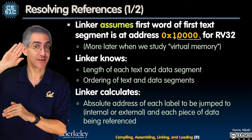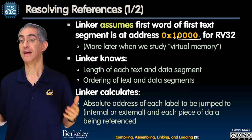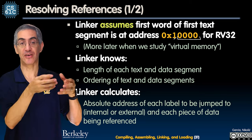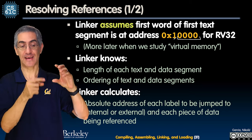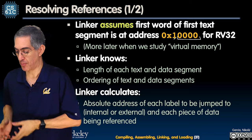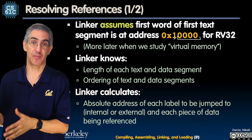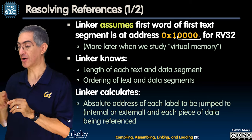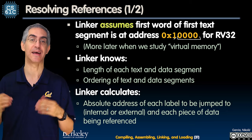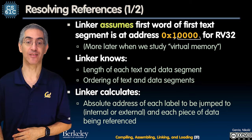Above that, the heap grows from there and the stack grows from the top down. The linker knows the lengths of all these sections from the info in each .o file — how long each text and data segment is. Once it knows the lengths and the ordering, it can calculate absolute addresses and repair and edit those links.